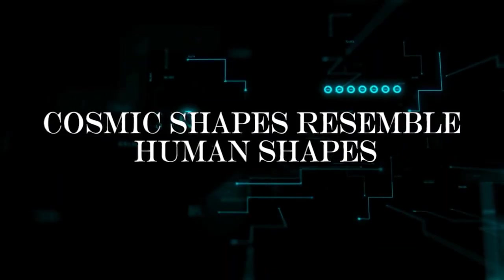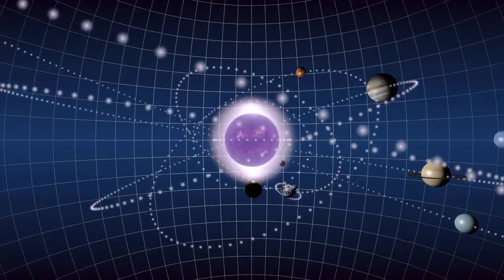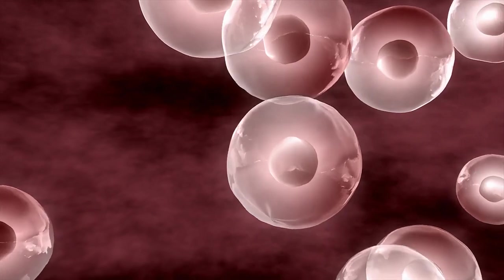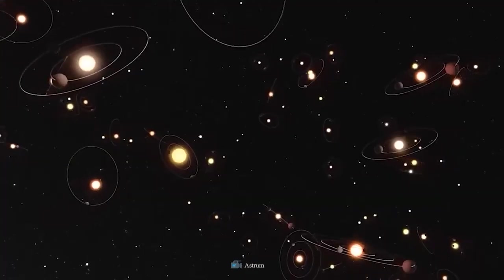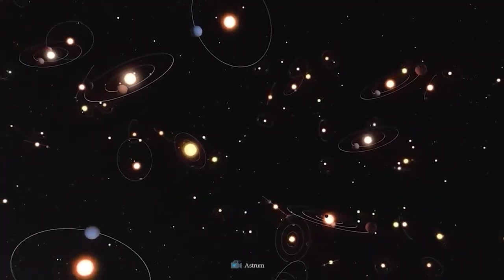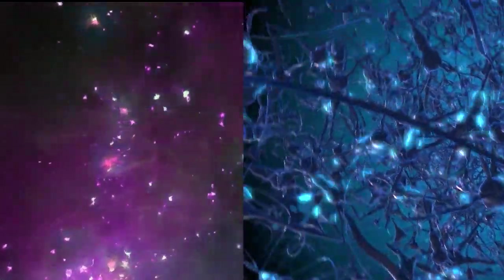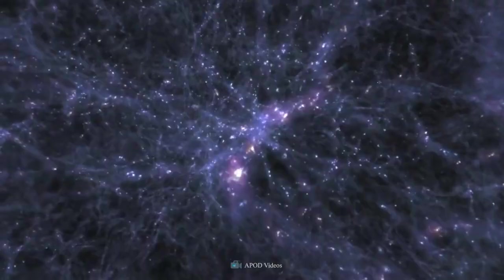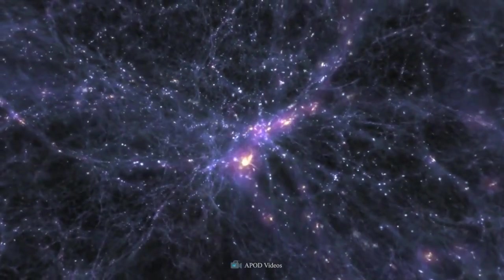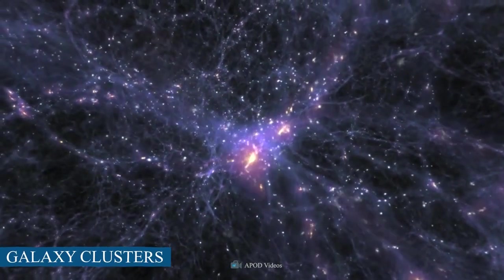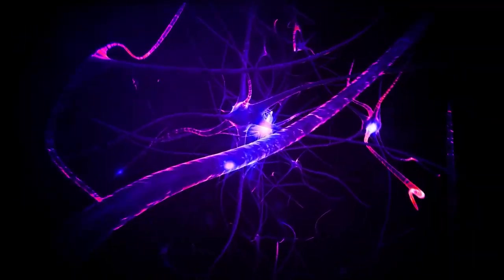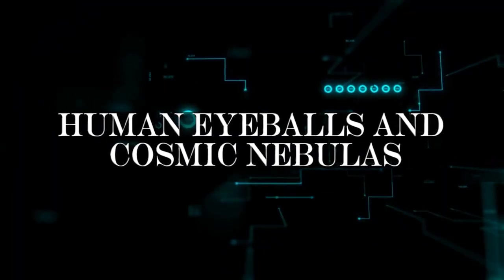Cosmic shapes resemble human shapes. There are some patterns that you simply cannot ignore when it comes to the structure and behavior of subatomic particles, cell and tissue structure, and the celestial bodies of our solar systems planets. When you compare an image of the known universe to a photo of neurons in the human brain, they look very similar. The largest known structures in the cosmos are enormous galaxy clusters with connections and empty spaces between them that mirror the organization of neurons and their pathways in the human brain.